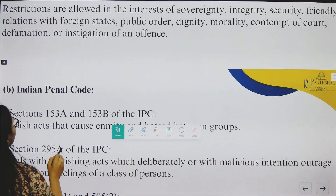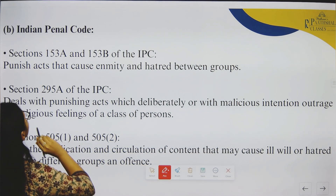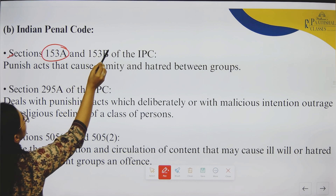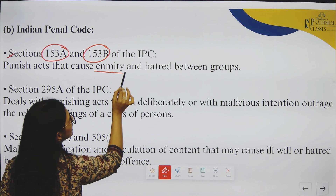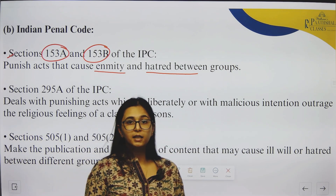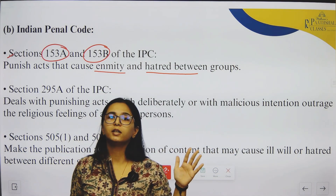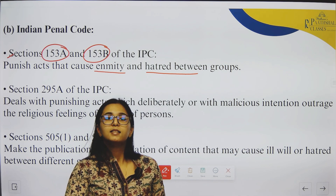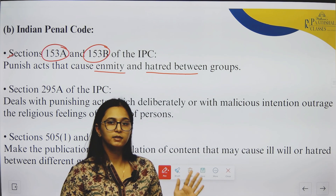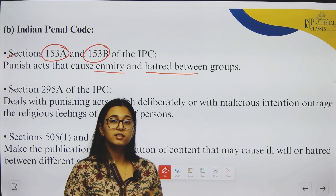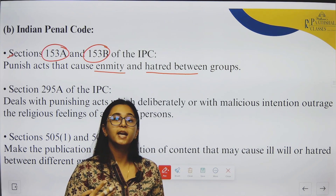In the Indian Penal Code, there are three key provisions. First is Sections 153A and 153B. These punish acts that cause enmity and hatred between groups — meaning hostility and active opposition between groups. For example, if one group makes comments on another group's sexual orientation, like a straight person commenting hatefully on gay people, it gives rise to violence and hatred, and such acts are punished.